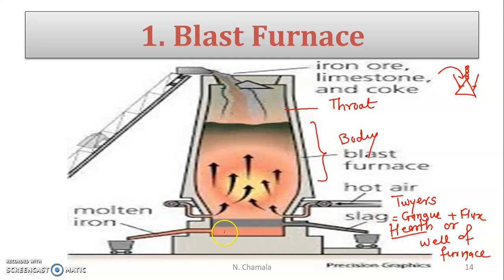Slag, which is lighter in weight, forms above the molten metal. It is fusible — meaning in molten state — a combination of gangue and flux. It is removed through the top opening, and through the bottom opening molten metal is taken out.